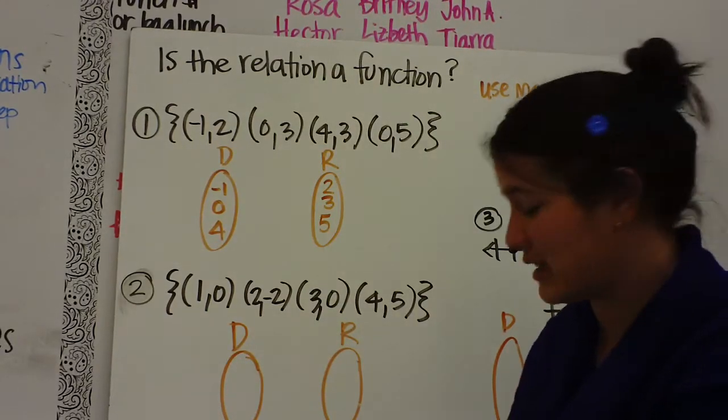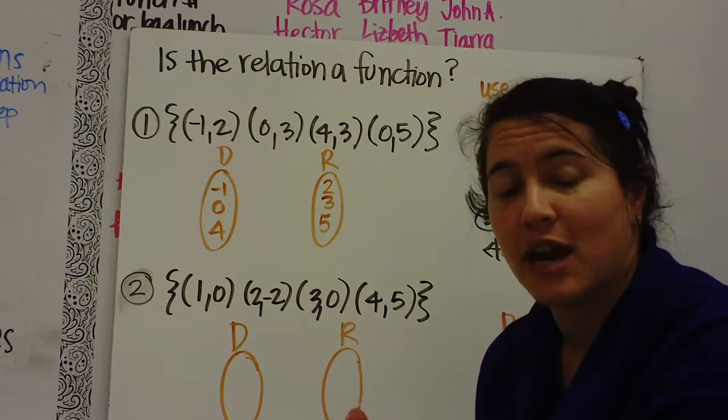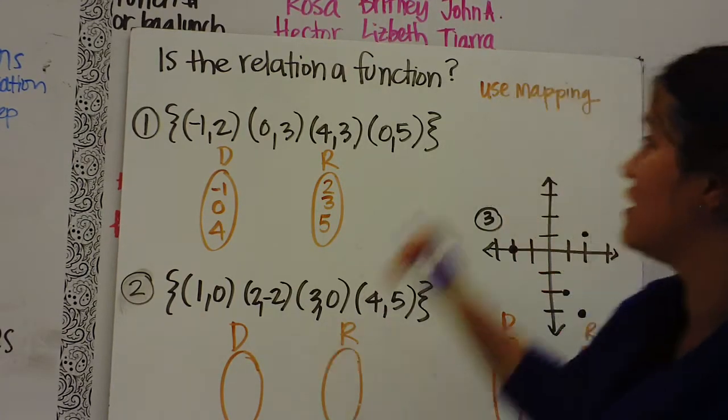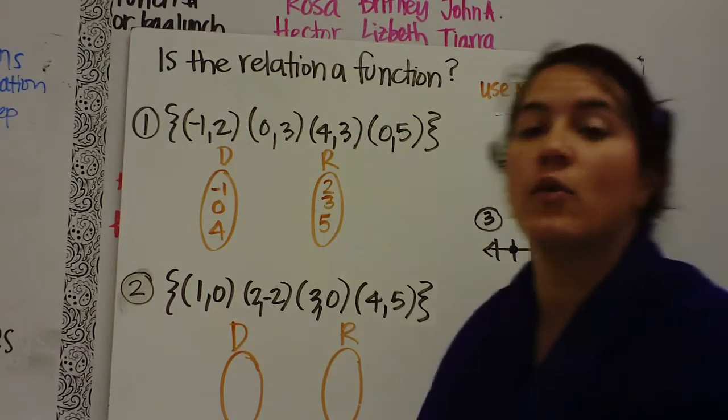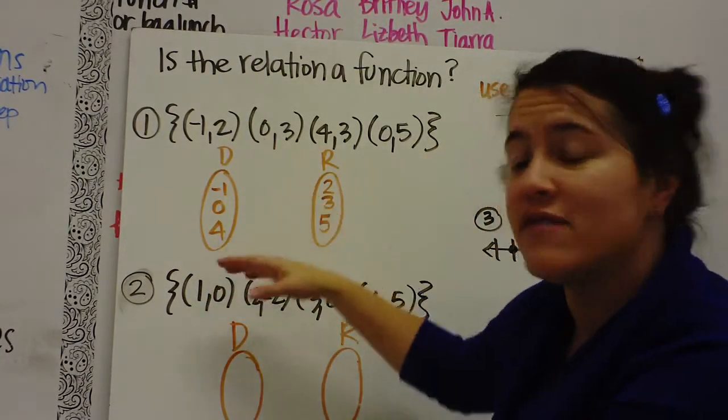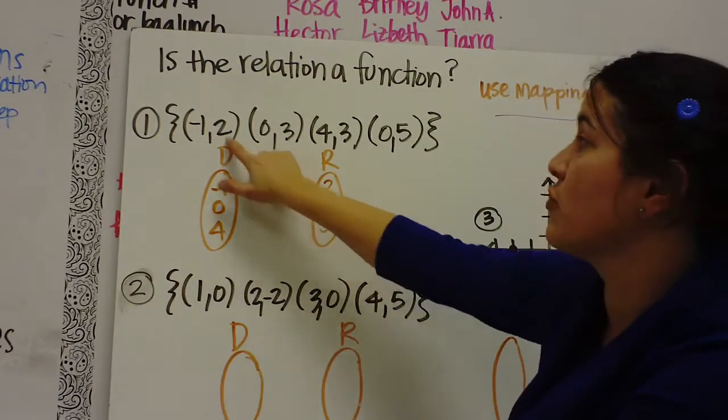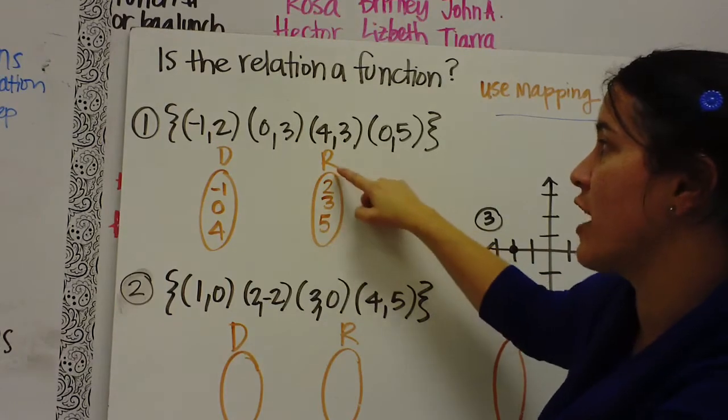Okay, the bell might ring. So is this relation a function? Like I said, a function is a special type of relation. And the way that we find out is we're going to use mapping. So what you do is you take your relation and you put your domain values in one circle and you put a D for the domain. You take your range values and you put it in another circle for the range.